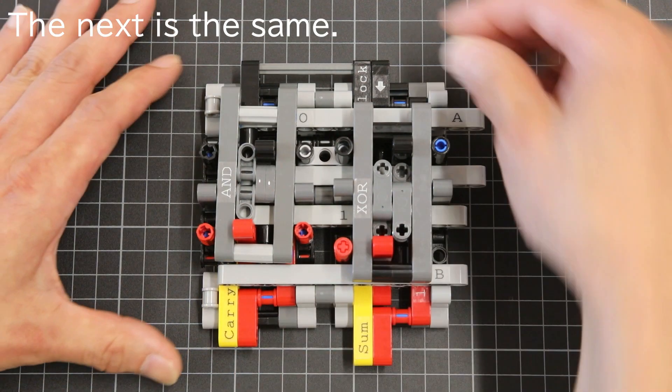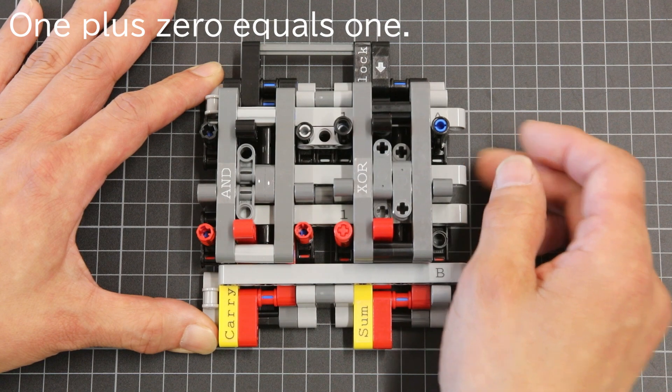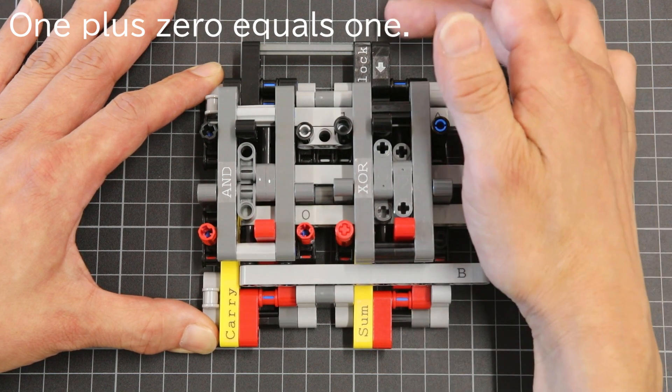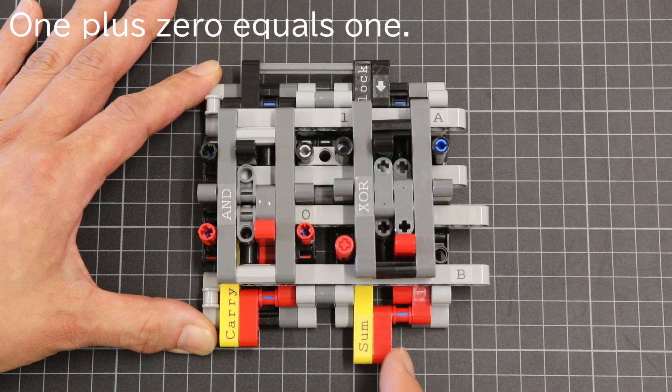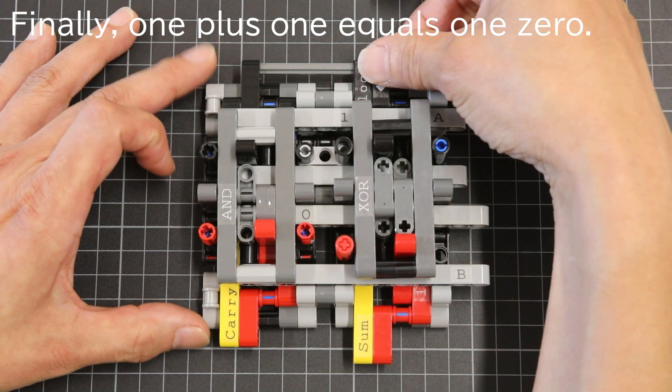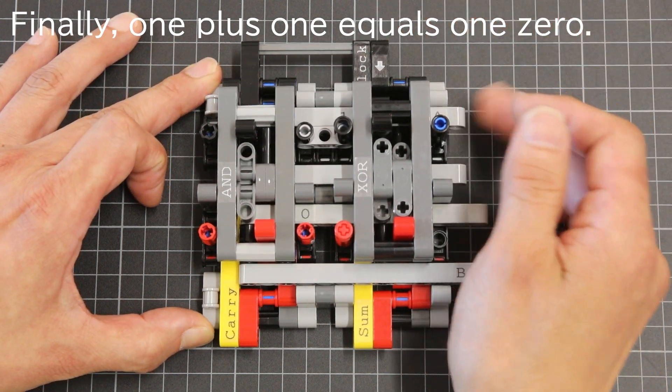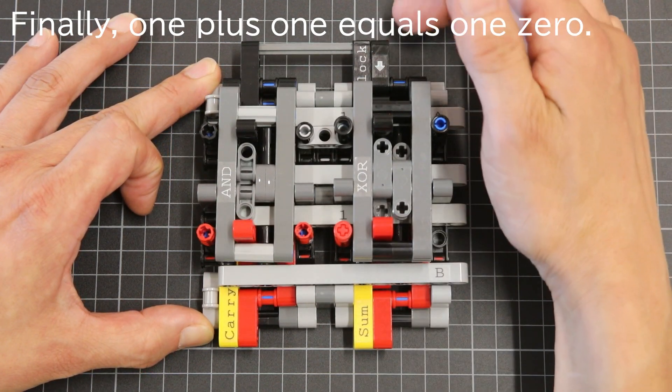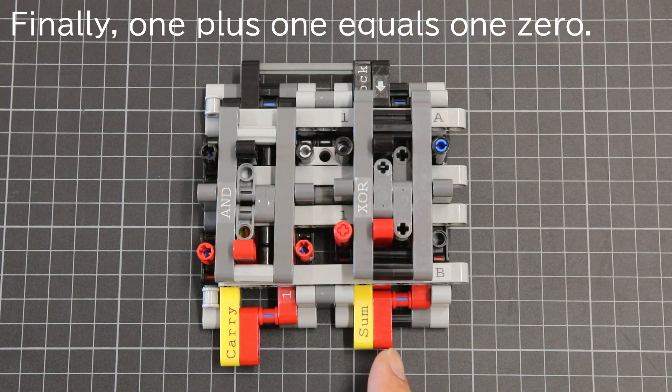The next is the same. 1 plus 0 equals 1. Finally, 1 plus 1 equals 10.